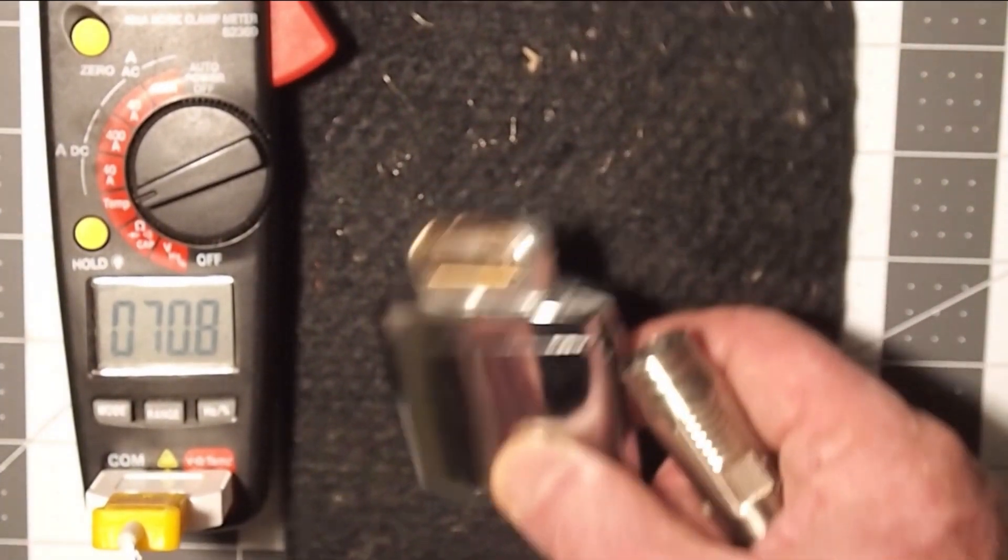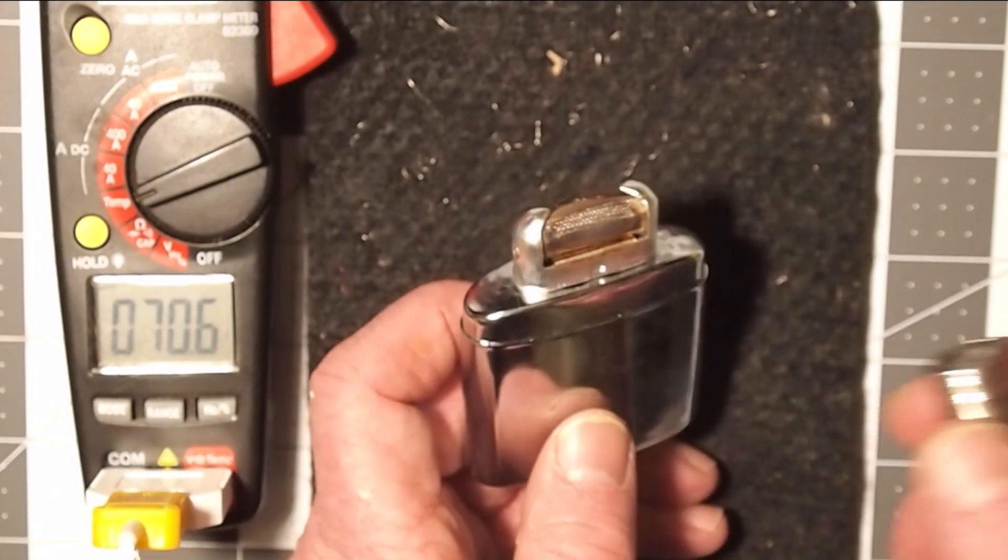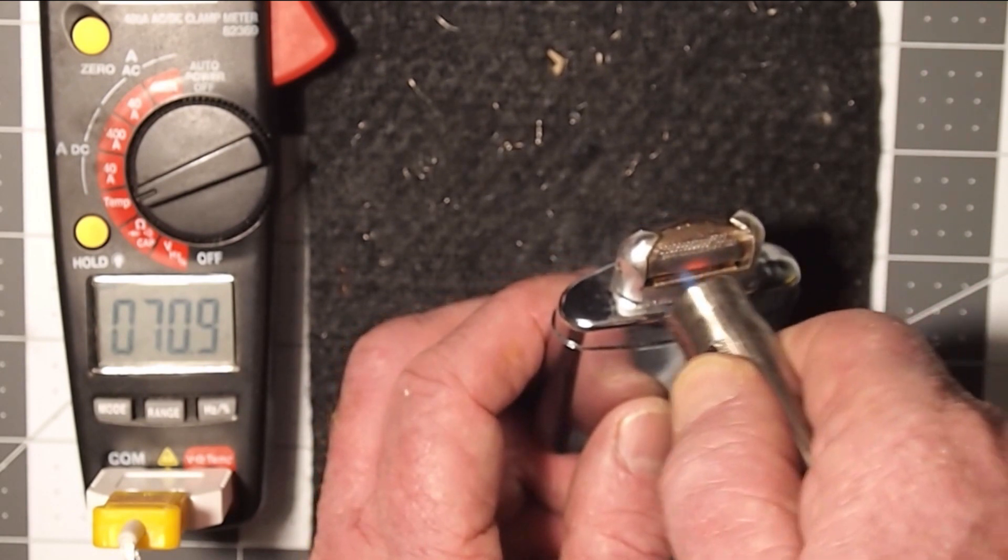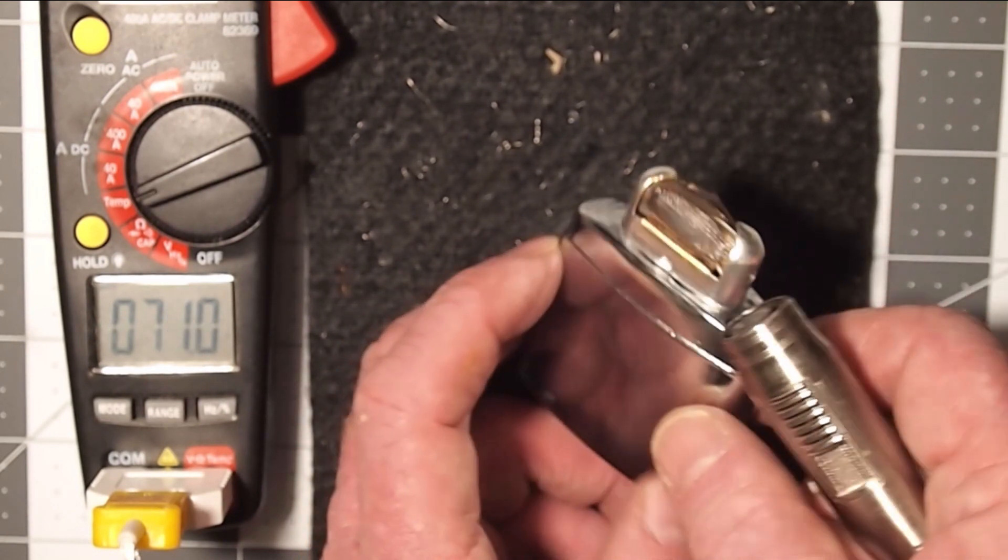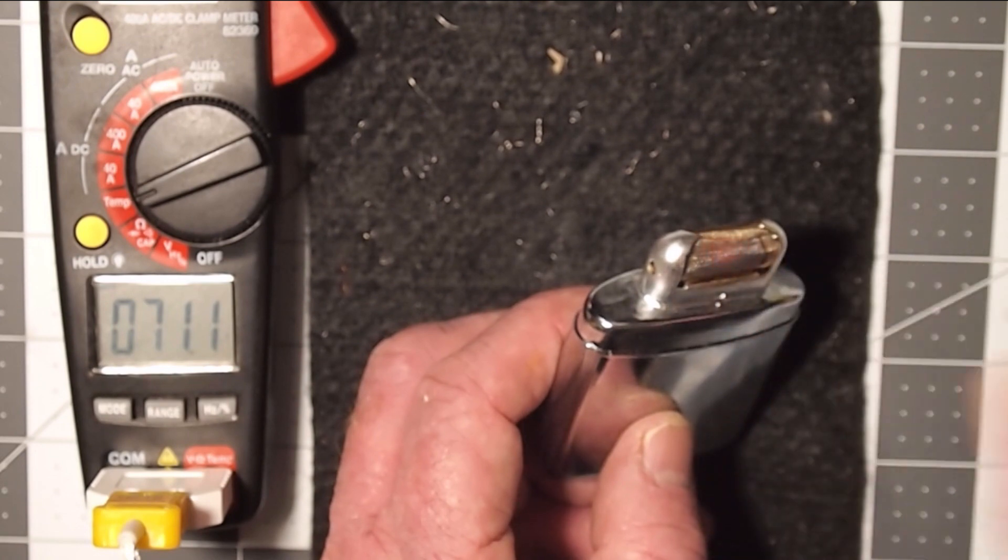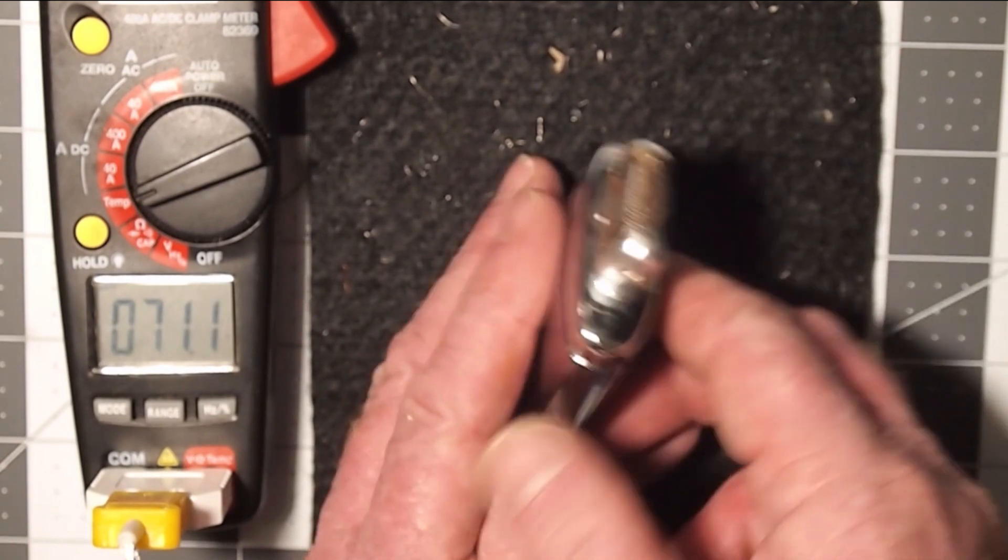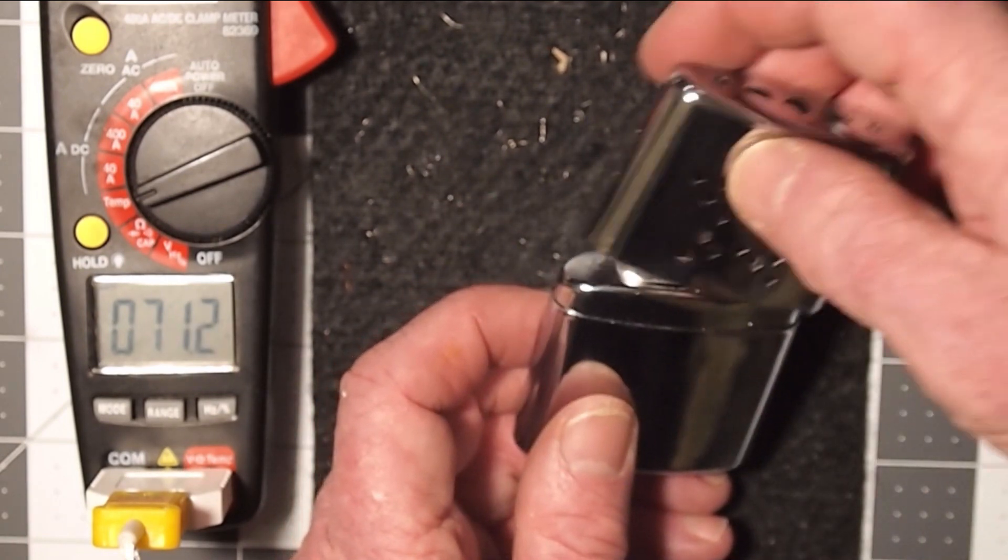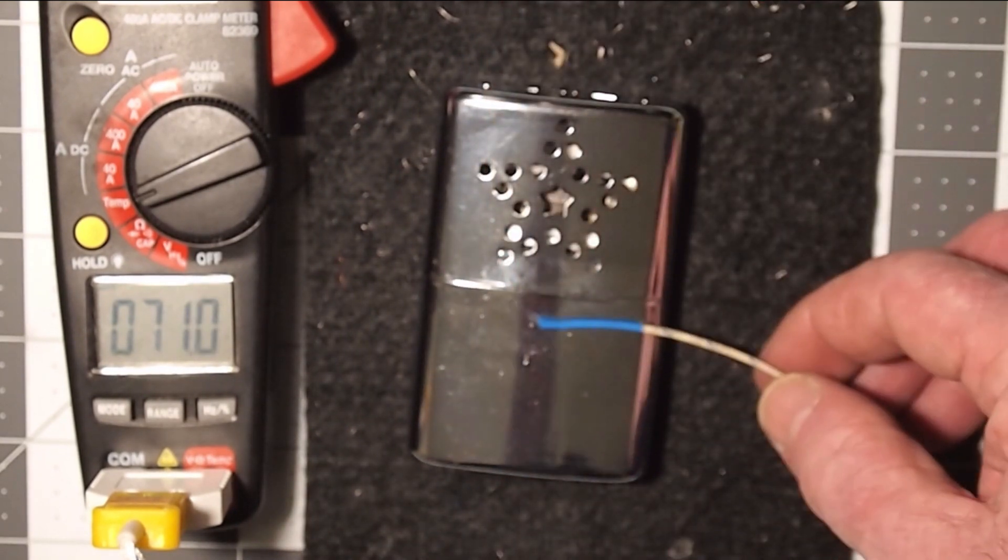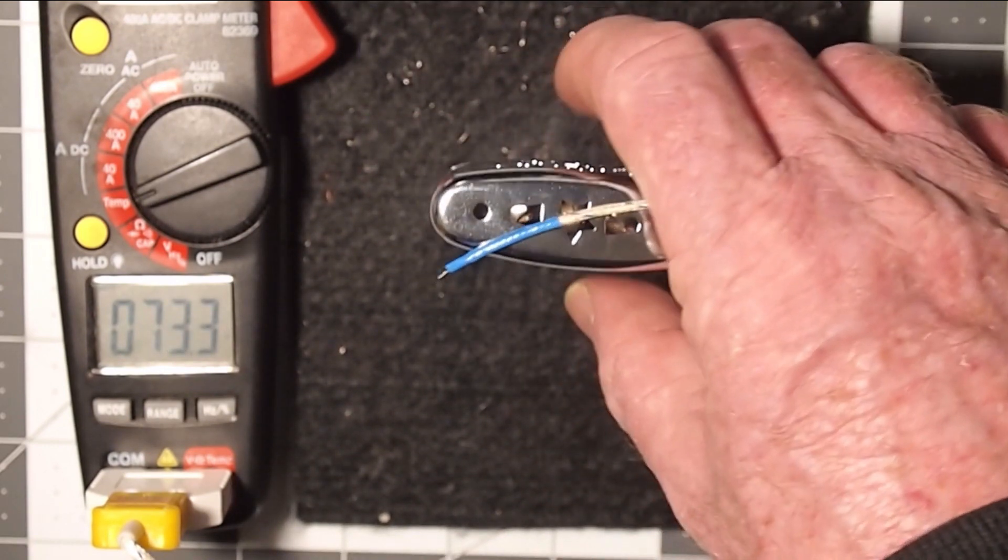So it started getting hot so I hooked up the temperature probe, came back five minutes later and it actually just went out. It only went for about maybe 20 minutes at most, half an hour, and then went out, and it has lots of fuel in it. I got about a hundred and ten out of it when I first put the probe onto it. Give it another try and see what happens.